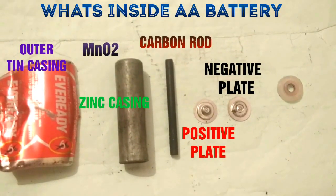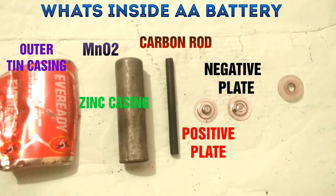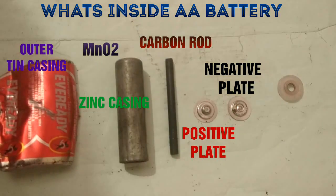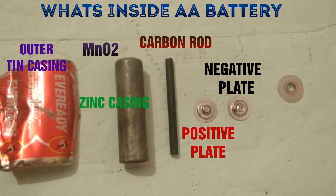An outer casing made of tin, a zinc casing which acts as a negative electrode and an MnO2 electrolyte, a carbon rod as a positive electrode, a positive and a negative plate, and a cap. That's it.